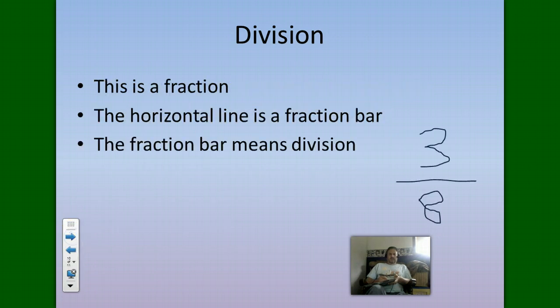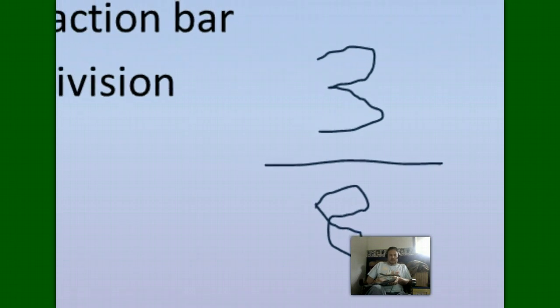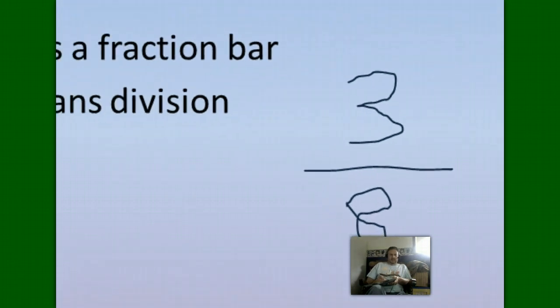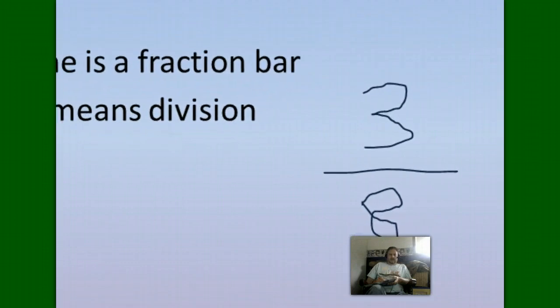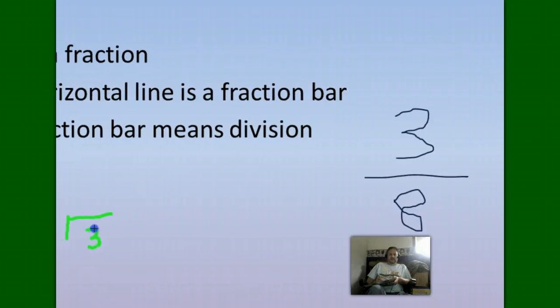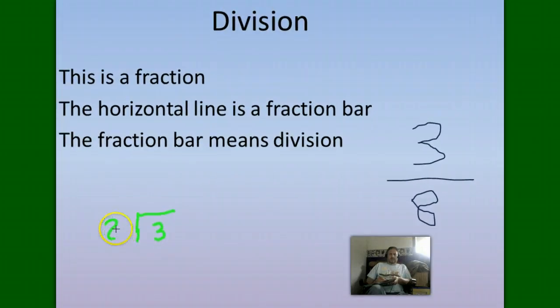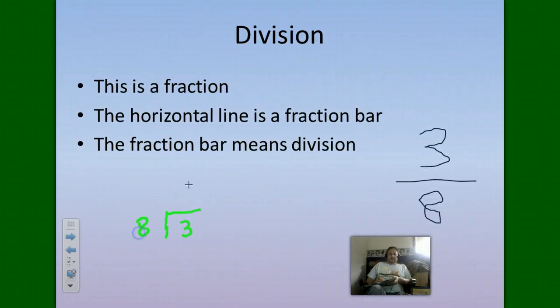You see I have a fraction here. This horizontal line is a fraction bar, and the fraction bar means division. So if you have this and you're asked to turn it into a division problem, this is what you need to do. First draw your house of division. The number three goes inside the box, so this is called my dividend, the number that is being divided. My divisor is eight, that's what I'm dividing it by, and then if I carry out the work my quotient, my answer, would be placed right there.